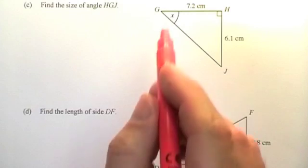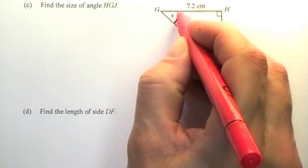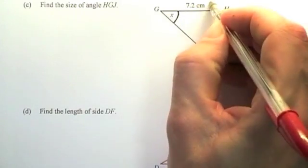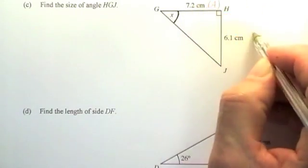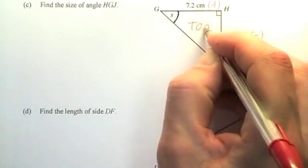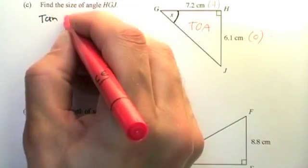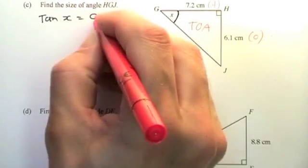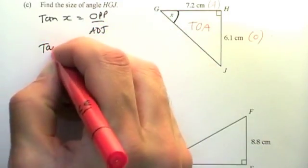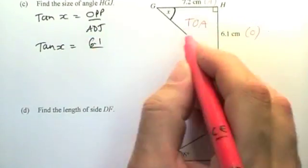Part C of the question, got the angle labeled. This time the angle is what is unknown. So X is the angle, and it's already labeled on the diagram. Identify the sides relative to that angle. This one is the adjacent side next to the angle. This one is the opposite side. So it's adjacent and opposite. That's a TOA triangle again. TOA is for tan, so tan of the angle which is X equals 6.1 over 7.2.